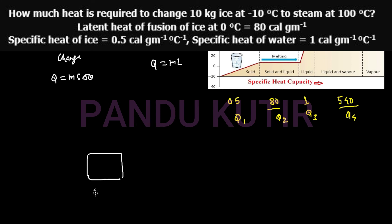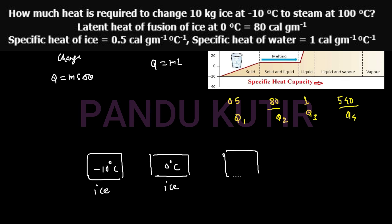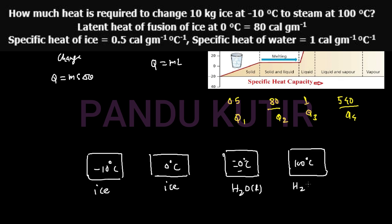We have a block diagram. The first step is ice at minus 10 degrees centigrade going to 0 degrees centigrade. Then ice converts to water at 0 degrees centigrade. Then water heats from 0 degrees to 100 degrees centigrade. Then water converts to steam at 100 degrees centigrade.